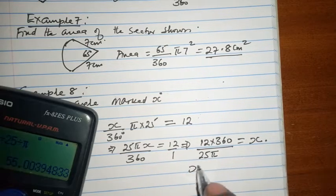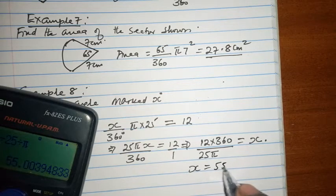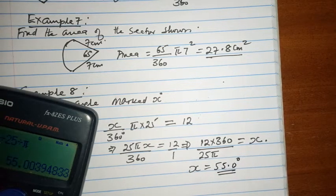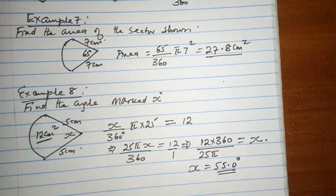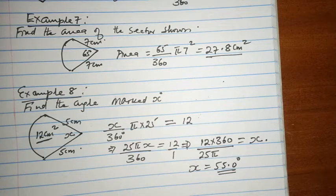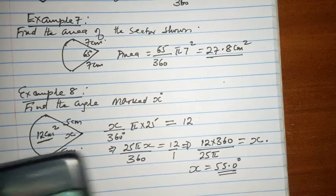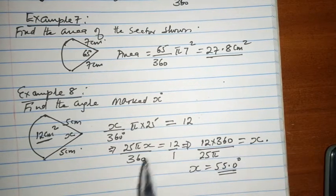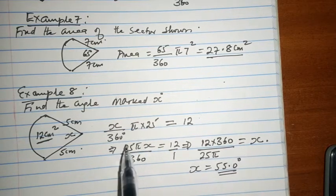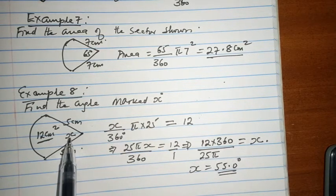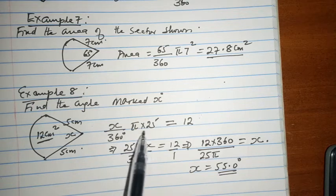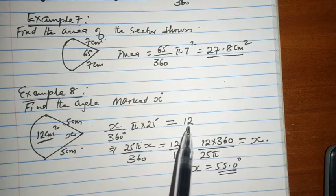You realize that x is 55.0 degrees to three significant figures. It is important to note that the formula for the area of a sector is simply the angle at the center over 360 pi r squared, which should give you the area.